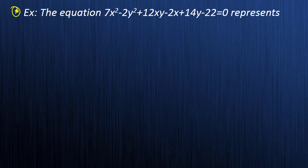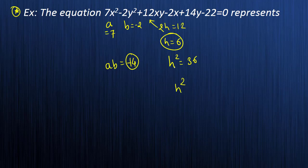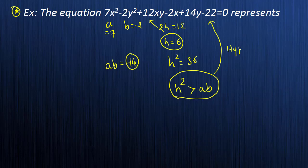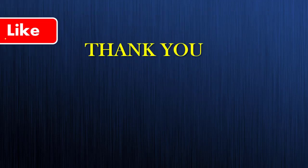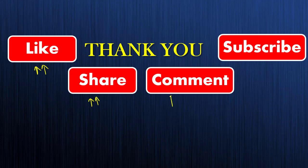Next example: a = 7, b = −2 — please make a note of the negative sign — and 2h = 12, so h = 6. Then h² = 36, and a × b = 7 × (−2) = −14. Since h² = 36 is greater than ab = −14, the condition h² > ab is satisfied, so the equation represents a hyperbola. Please expect at least one question based on this concept. If you like this trick, hit the like button, share with your friends, and subscribe so you won't miss any upcoming interactive videos.